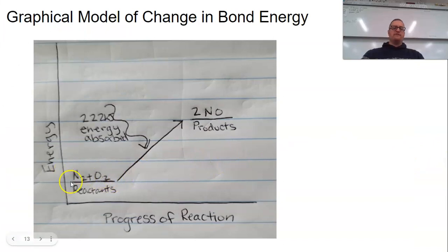Graphical, we start off at lower energy in our reactants. Our products have higher energy because they absorbed the amount of energy to go from reactants to products. As you can see, they're higher on the axis for energy and, again, further along for the progress.